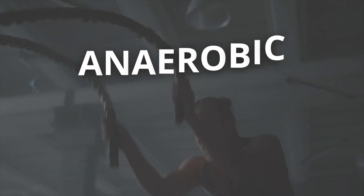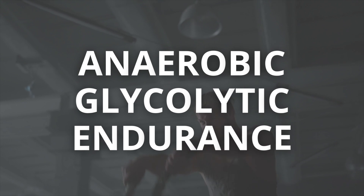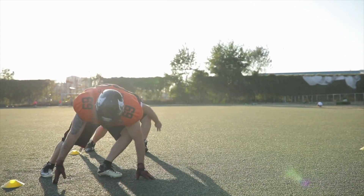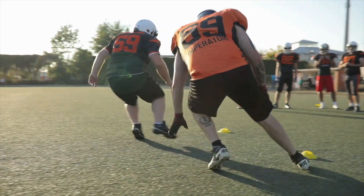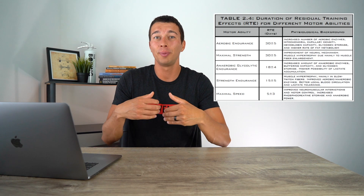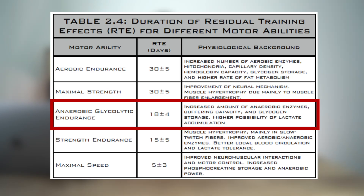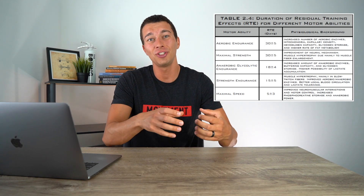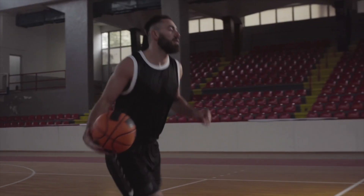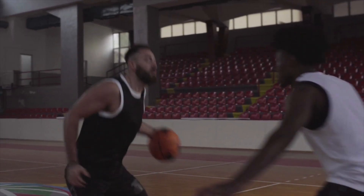That leads us into anaerobic glycolytic endurance, which we're typically going to train pretty heavily in the preseason. You can think of this as your conditioning work or your work on your lactate threshold. Anaerobic conditioning training improves your ability to buffer hydrogen ions as well as improves specific anaerobic enzyme concentrations. All of these physiological adaptations improve your conditioning for being able to run up and down the court, recover between football plays, or meet other anaerobic demands of sport.